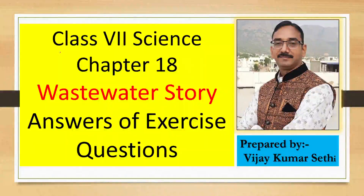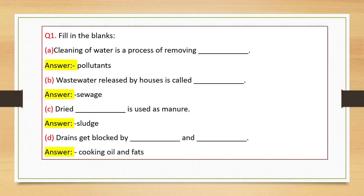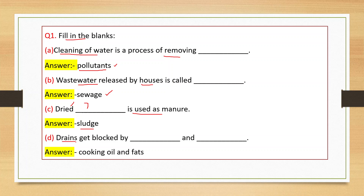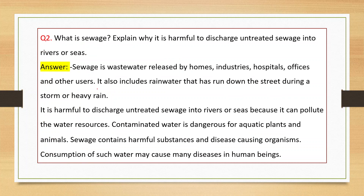Hello students, Class 7 Science Chapter 18 - Wastewater Story. In this video we will discuss the answers of exercise questions. Question number one: filling of blanks. Cleaning of water is a process of removing pollutants. Wastewater released by houses is called sewage. Dried sludge is used as manure. Drains get blocked by cooking oil and fats.